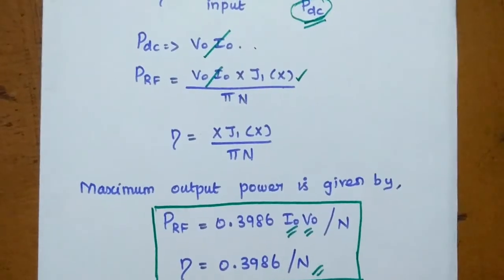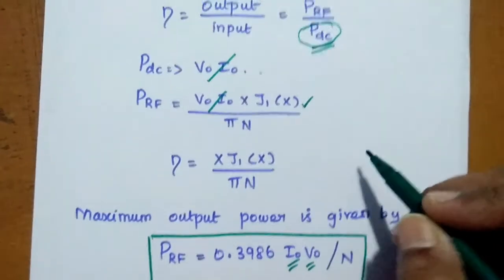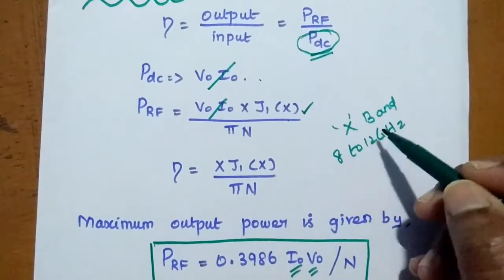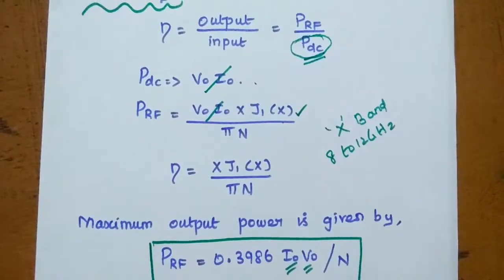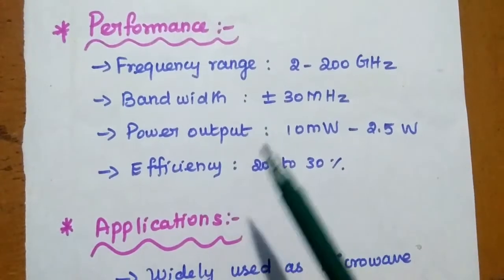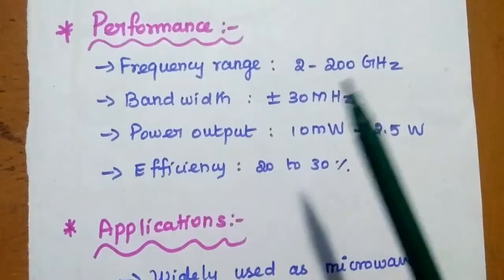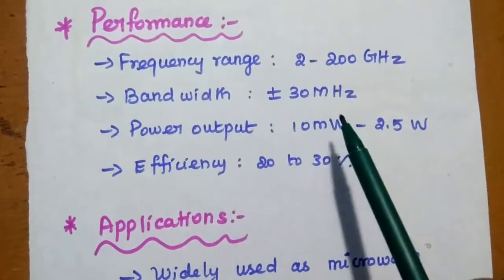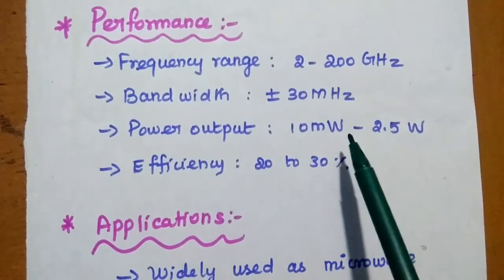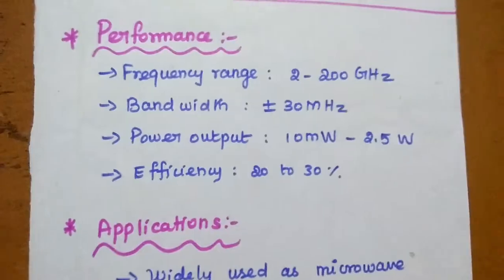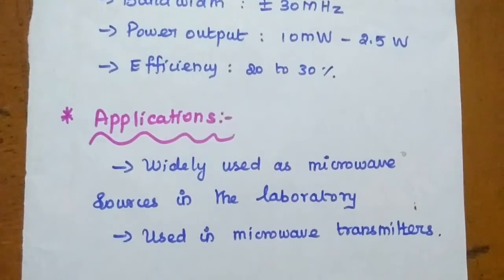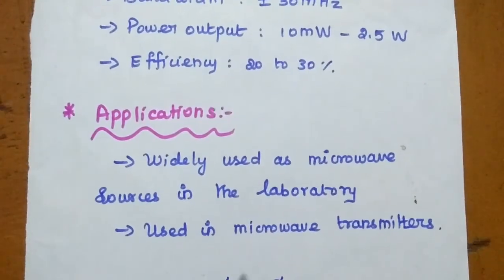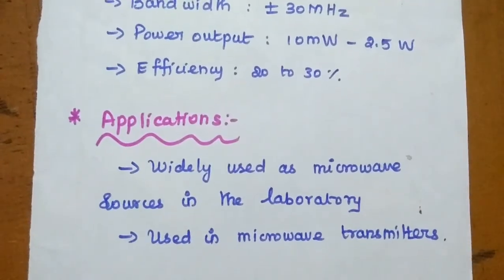These are the various parameters of the reflex klystron. It can generate frequencies in the range of 8 to 12 GHz for laboratory purposes, covering X-band and other band frequencies. The performance parameters are: frequency range 2 to 200 GHz; for laboratory use, X-band and C-band. Bandwidth is ±30 MHz. Output power is 10 milliwatts to 2.5 watts, and efficiency is 20 to 30 percent. Reflex klystrons are widely used as microwave sources in the laboratory and in microwave transmitters.